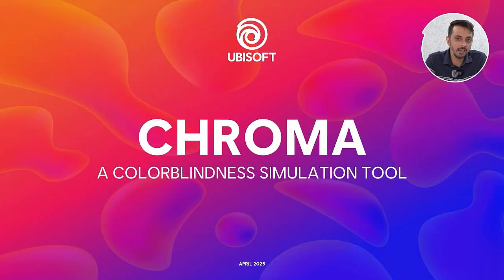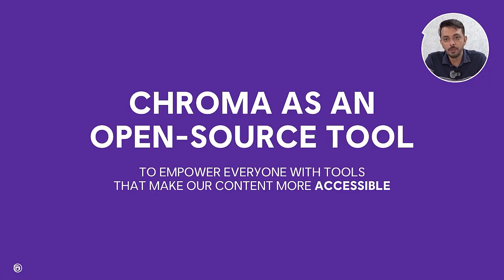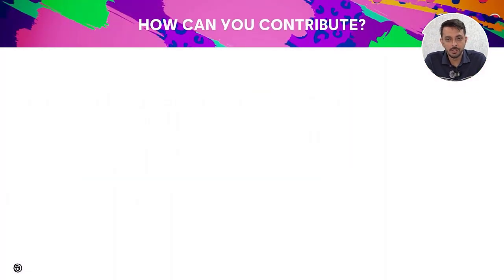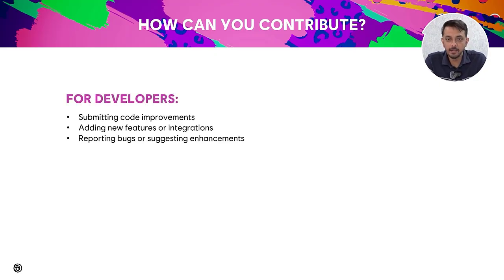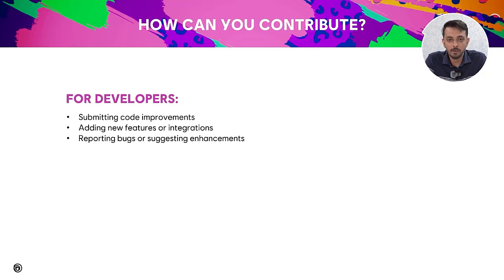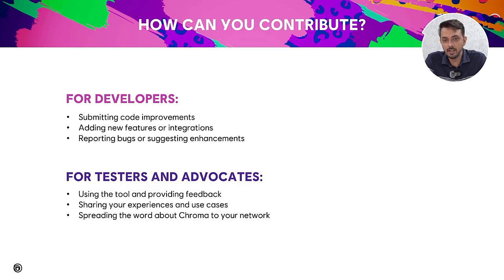And that's it — Chroma is a user-friendly tool that's easy to configure and use. We are releasing Chroma as an open source tool to empower everyone in making content accessible. We invite you to use it, contribute to it, and help improve it continuously. Accessibility is a collective effort and we believe in the power of community collaboration. Whether you're a seasoned developer or just starting out, you can contribute by submitting code improvements, adding new features or integrations, reporting bugs or suggesting enhancements, using the tool and providing feedback, sharing your experiences and use cases, and spreading the word about Chroma.